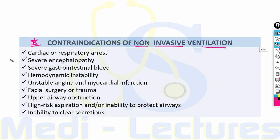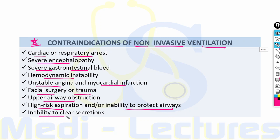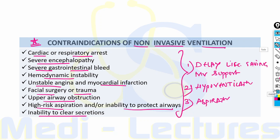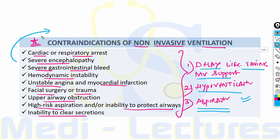Contraindications to NIV include cardiac or respiratory arrest, severe encephalopathy, severe GI bleed, hemodynamic instability, unstable angina and MI, facial surgery or trauma, upper airway obstruction, high risk of aspiration or inability to protect airways, and inability to clear secretions. NIV is contraindicated in such patients because it can delay life-saving mechanical ventilation, cause hypoventilation, and increases the risk of aspiration. Conventional mechanical ventilation with ET tube should be used instead.